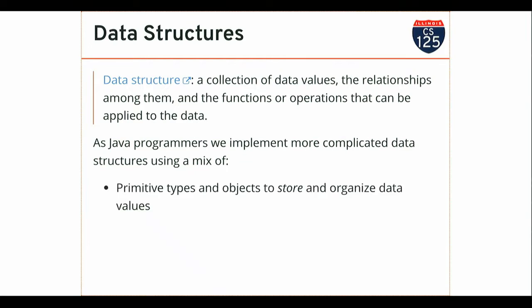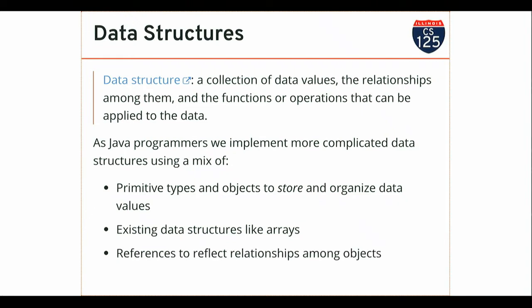When we build data structures in Java, we do that typically by designing classes that implement a particular data structure. Those classes use primitive types or objects to store data itself, and we can make use of existing built-in structures like arrays in one of our list implementations. We use references frequently to establish relationships between data — a piece of data is encapsulated in a class that holds a reference to another piece of data. This will be particularly important when we talk about linked lists and trees.